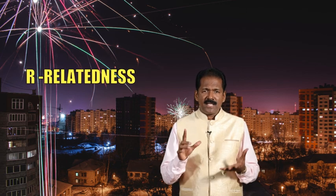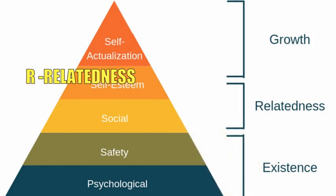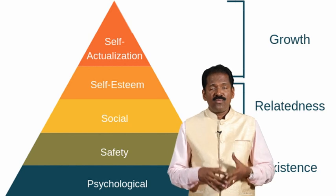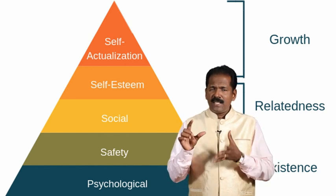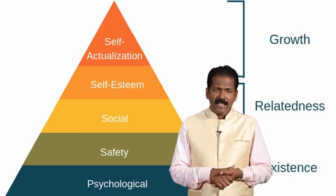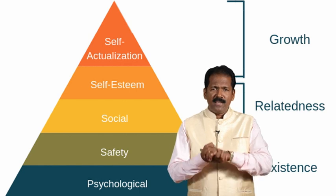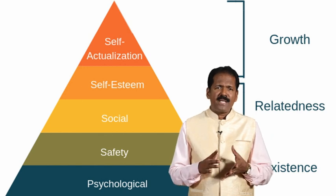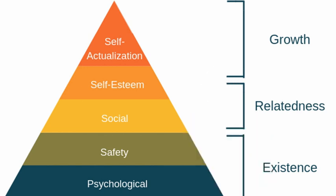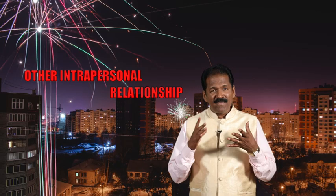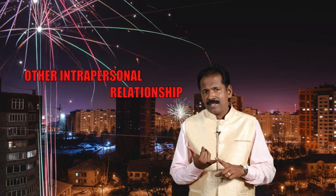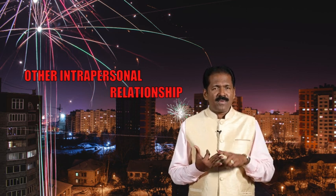The second need is relatedness. R stands for relatedness — it covers belongingness and relationships, including interpersonal and social relationships. The need for love, friendship, and interpersonal relationships, which are mentioned in Abraham Maslow's theory, are renamed here as relatedness. It is necessary for all human beings to have good relationships with their surroundings. An employee looks for an environment where he can have good relationships with his superiors, subordinates, and colleagues.